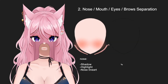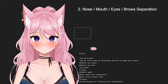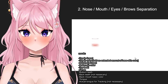Moving on to the nose, mouth, eyes, and eyebrows separation. Starting with the nose, I have the shadow, highlight, and nose line art. For the mouth, I have the top lip liner, top lip color — and note that you want to add an extended amount of basic skin color so the inside of the mouth will be covered, but not too much. On that layer I also add the lip color. Then bottom lip liner, bottom lip color, and top teeth.